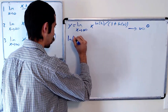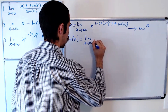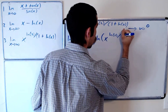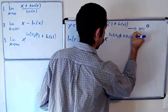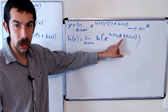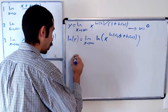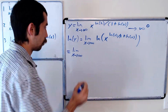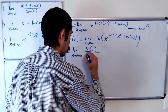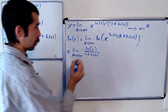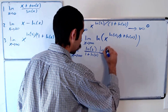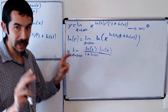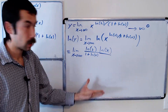So the natural log of y is equal to the limit as x goes to infinity of the natural log of x to the ln of 2 over 1 plus ln of x. Using log rules, we can bring the exponent in front. So ln of y equals the limit as x goes to infinity of ln of 2 over 1 plus ln of x, times ln of x — bringing it into the numerator. If we plug in x equals infinity we get infinity over infinity, so we can use L'Hopital's rule.